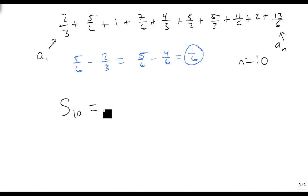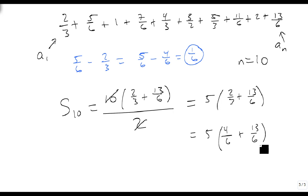The s10 of this series is n, which is 10, times 2/3 plus 13/6, divided by 2. I'm going to do this part first: 10 divided by 2 is 5. 2/3 plus 13/6 isn't very friendly, so this equals 5 times 4/6 plus 13/6, which is 5 times 17/6. Now 5 times 17 is 85, so we end up with 85/6, which doesn't reduce.